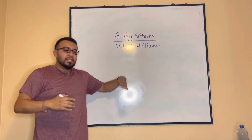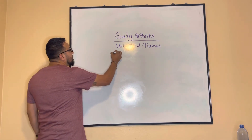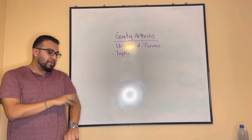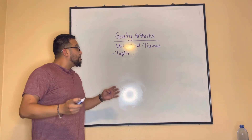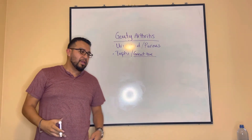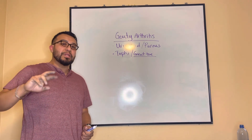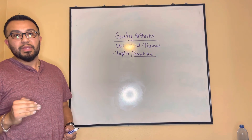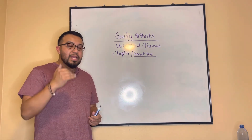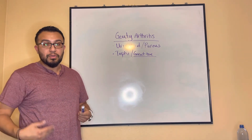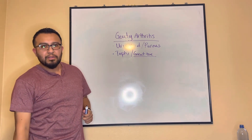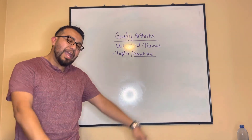Any time uric acid crystals deposit anywhere in the body, we call that tophi. Tophi usually accumulates on the skin and, most notably, develops in the great toe. The reason it deposits there is that the distal extremity of the foot has the least turbulence in blood flow — it's furthest from the heart — and the temperature there is slightly lower. Uric acid tends to settle in areas where blood isn't moving fast and the temperature is slightly below body temperature.